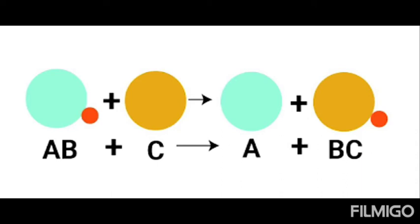The third type of reaction in this series is displacement reaction. The reaction given is AB plus C gives A plus BC. What happens is that if you have a compound that reacts with an element which is highly reactive, then the compound will break apart. C displaces B from AB, because C is more reactive than B. This kind of reaction is known as displacement reaction.